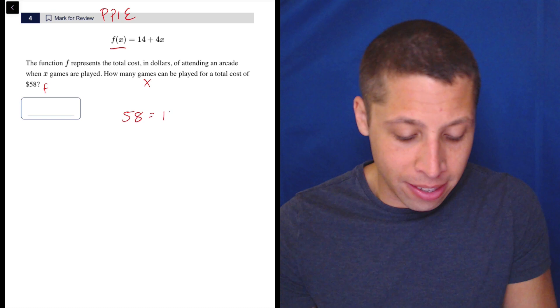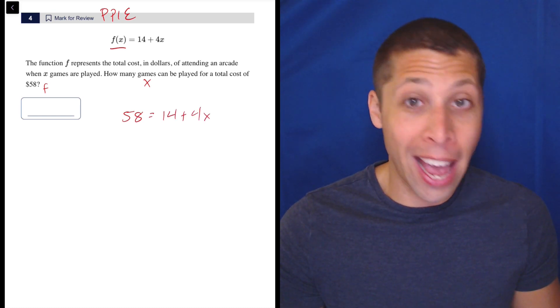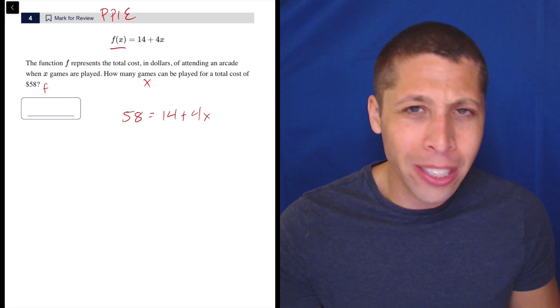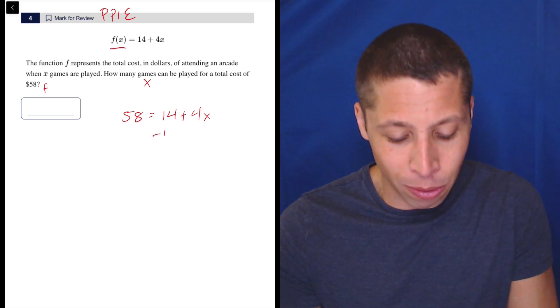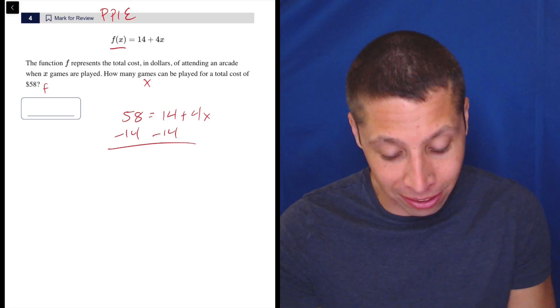So 58 is equal to 14 plus 4x. And I would just do this on my paper. I would not do this in my head. I would not open up Desmos for this. This is way too easy, but you can, if you need to, subtract 14 from 58 with the calculator.